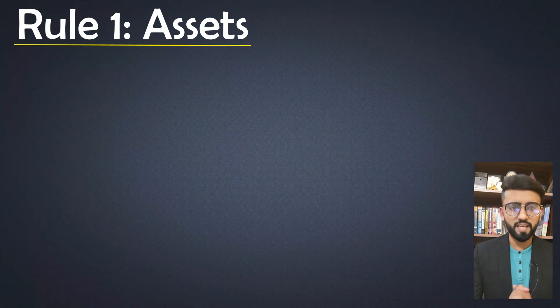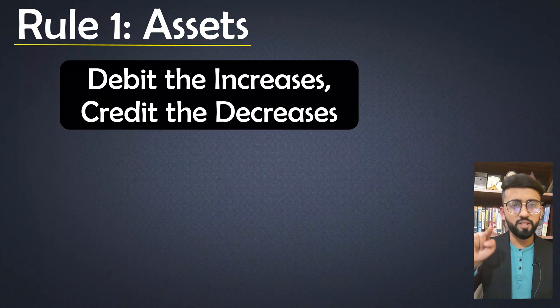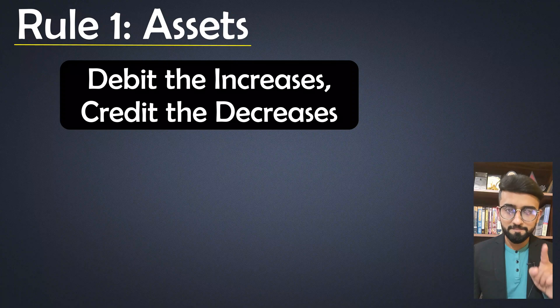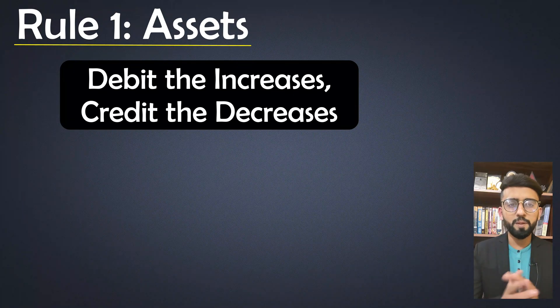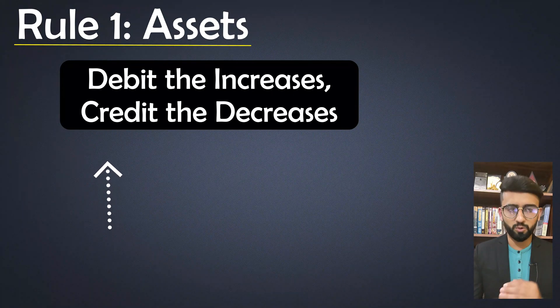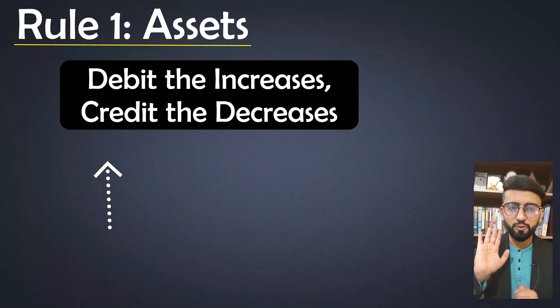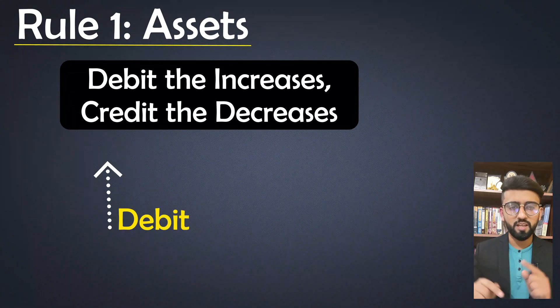The rule for assets is: debit the increases and credit the decreases. So whenever assets increase in the business, they will be debited.